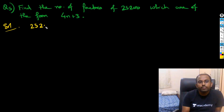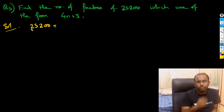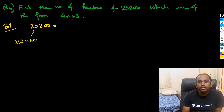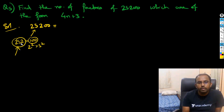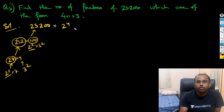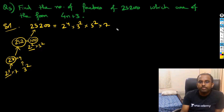We write 25,200 and factorize it. It is 252 into 100. What is 100? It is 2 squared into 5 squared. What is 252? It is 28 into 9, that is 2 squared into 7, and here I get 3 squared. Combining, I will get 2 raised to 4, then 3 squared, then 5 squared, and then 7 raised to 1.